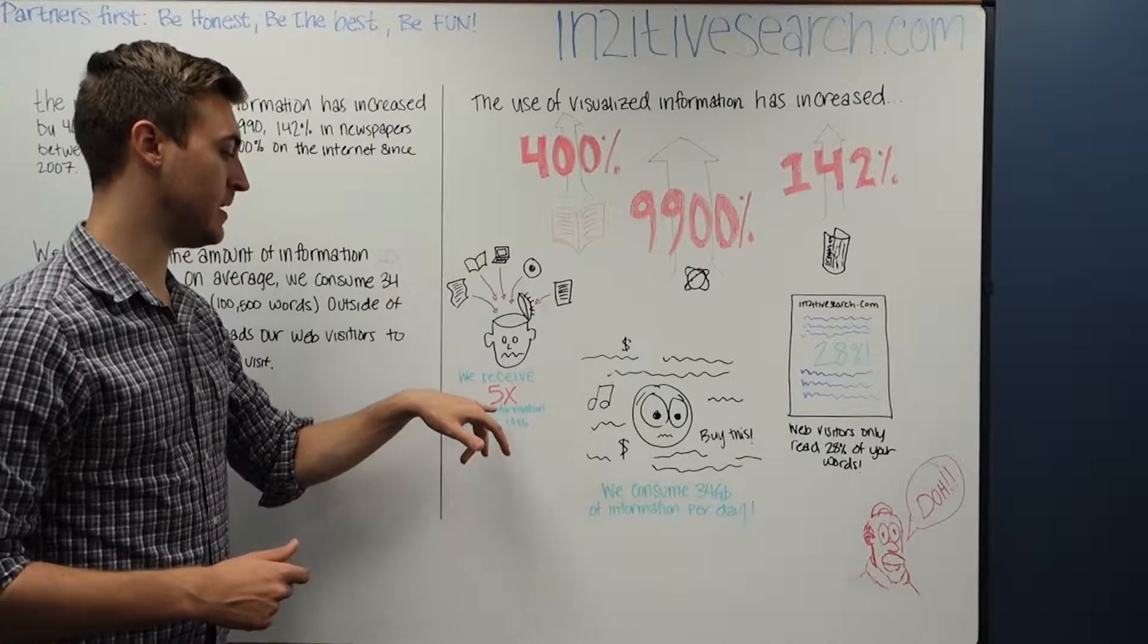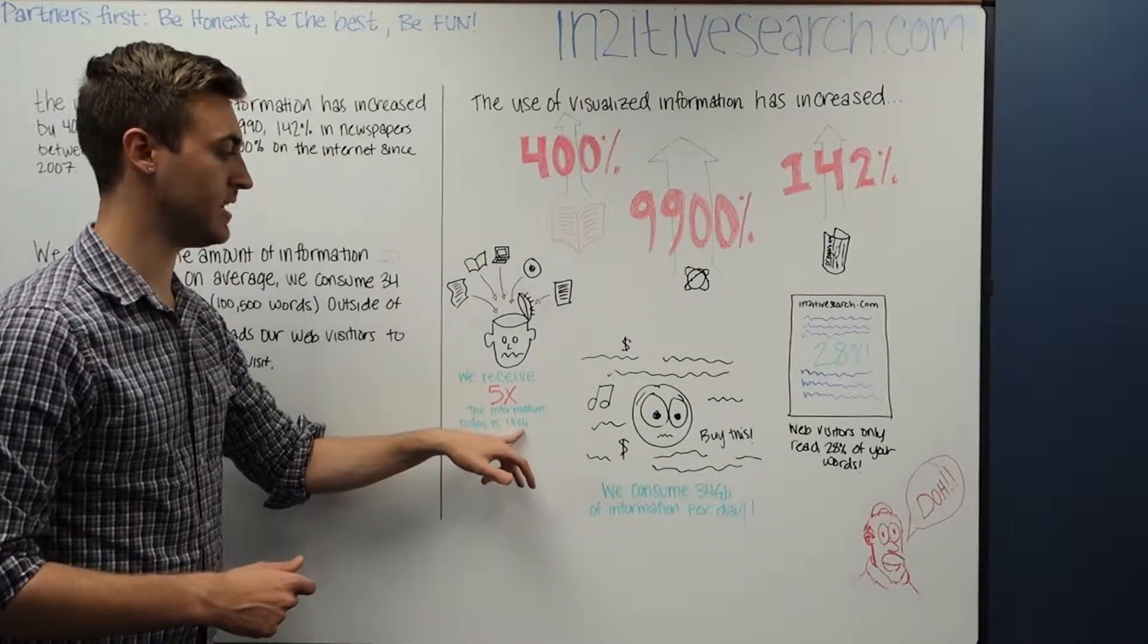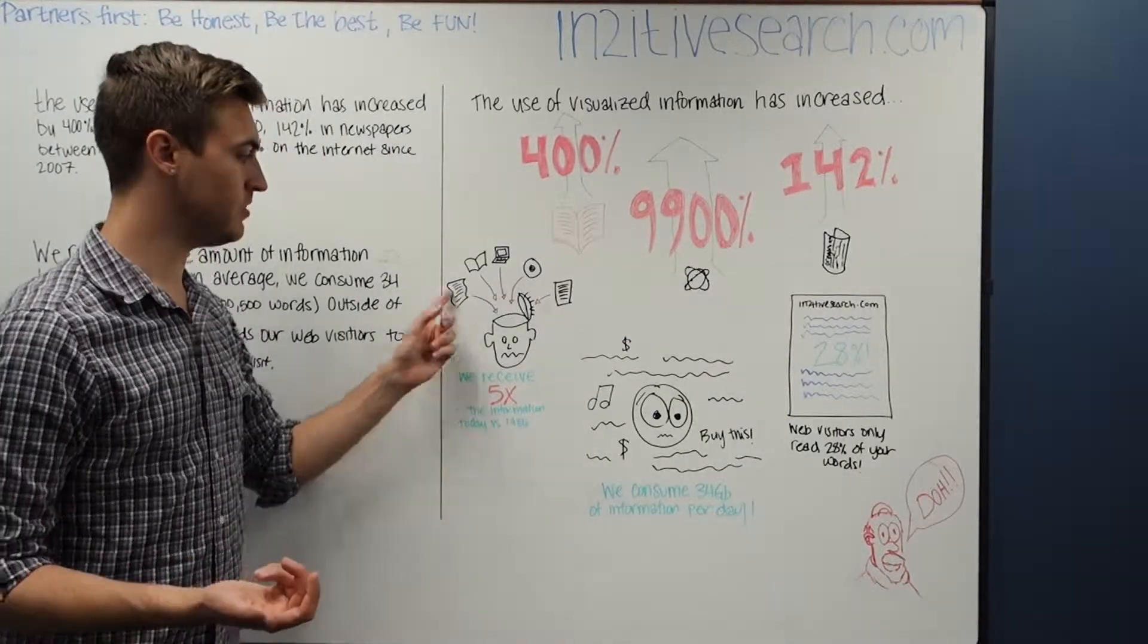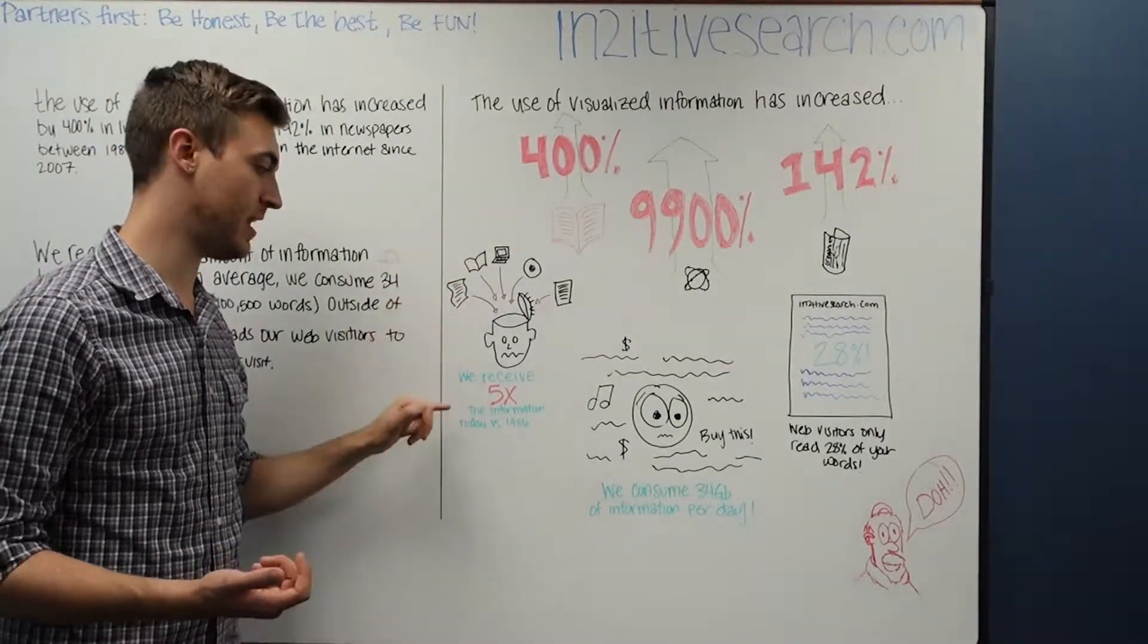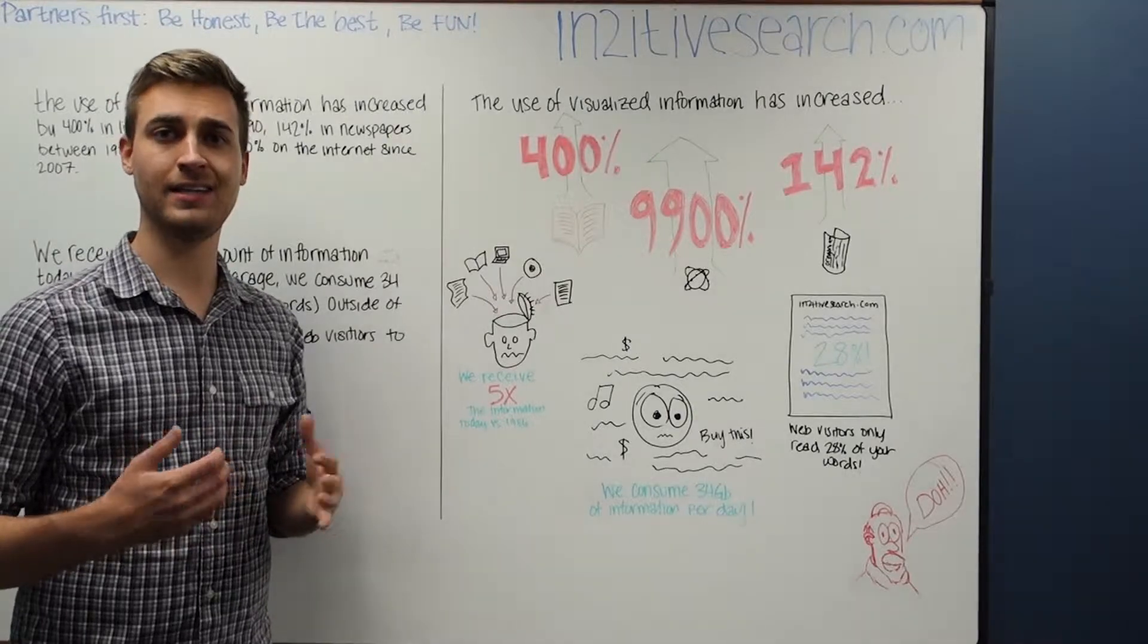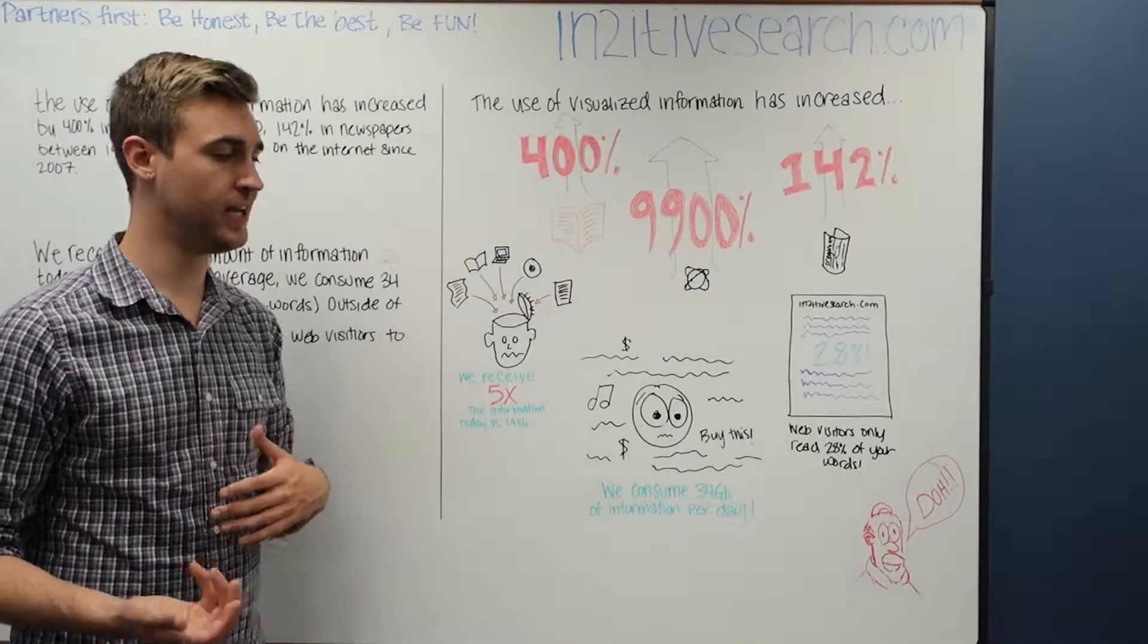Then below it, I have, we received five times the information today versus 1886. So just looking at this, you can see that all of these types of information are being poured into his head and five times. You can get a really quick idea of what I'm trying to convey here.